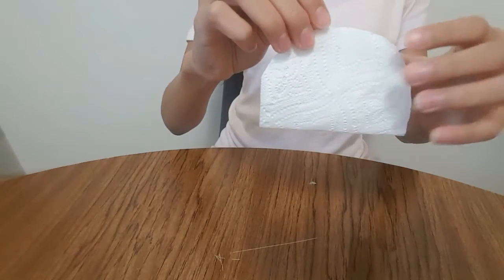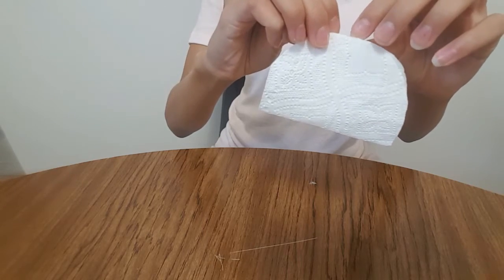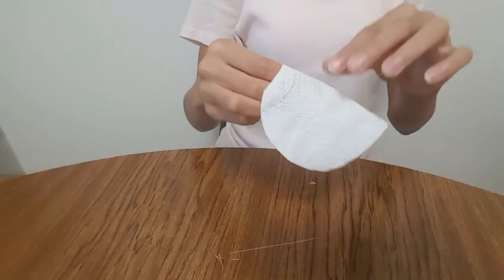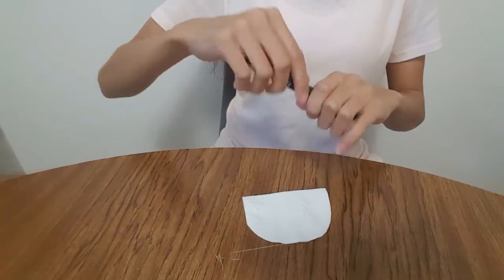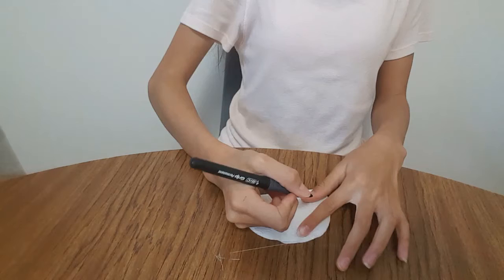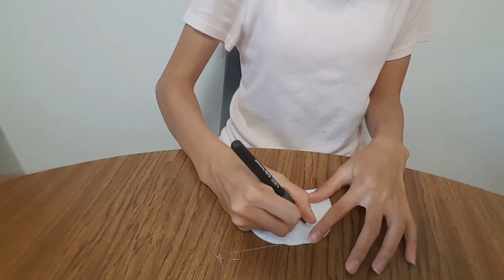This is what it looks like when it's all cut out. It's like a half a circle. If you open it up, it's an oval. But you'll want to keep it folded in half. Now you'll want to draw a little face on it. This is a super fun craft to do when you're bored at home.